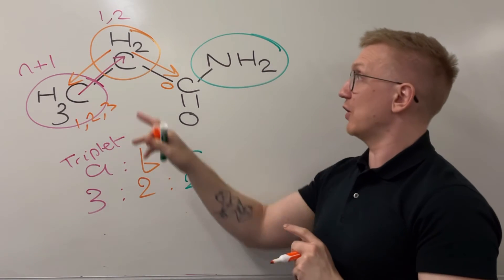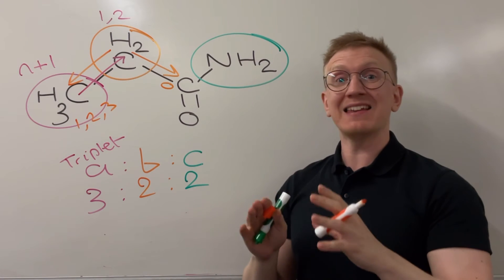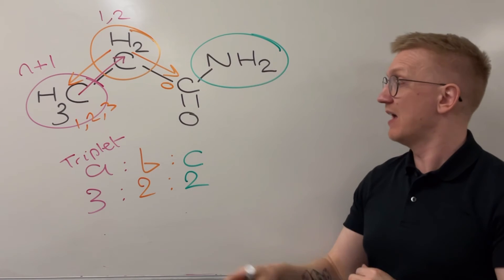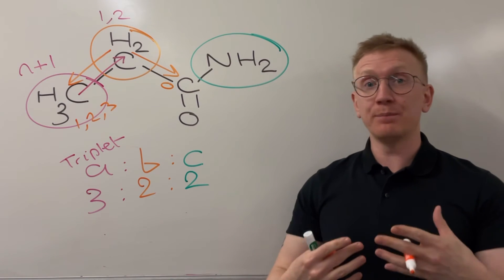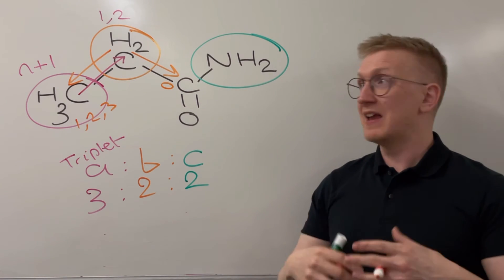Which means our n value for environment B in the middle here is a 3. So n equals 3, because that's the number of neighboring hydrogens on the next carbon up in the chain. What that means is, following the n plus 1 rule, environment B is going to be split into a quartet.